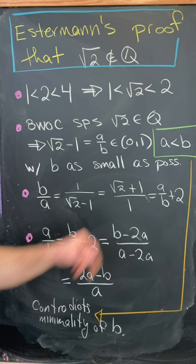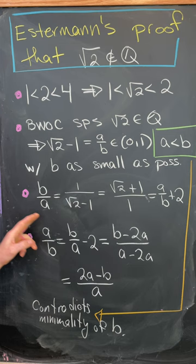And then we'll look at b over a which can be simplified to a over b plus 2 after a brief calculation.